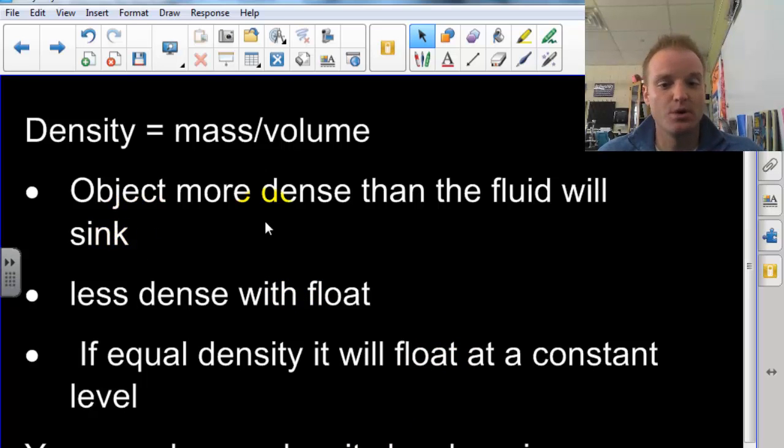And the quick rule of thumb: an object more dense than the fluid will sink, like a stone in water. If it's less dense, then it will float, like a piece of wood floating on top of the water. And the third one: if it's equal density, it will float at a constant level. With our Bob, when I made my Bob float at a constant level or hover, that density had matched that of the water. It wasn't floating, it wasn't sinking, it was hovering there in the middle.